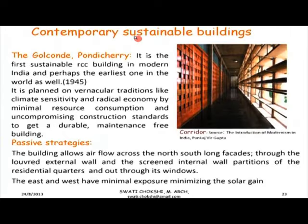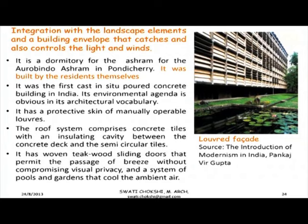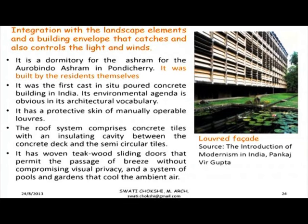Let us look at contemporary sustainable buildings. The first is the Gold Cone in Pondicherry — a dormitory for the Aurobindo Ashram built in 1945 by the residents themselves; Antonin Raymond was the architect. It is a landmark for its sustainable measures, passive strategies, and uncompromising workmanship. Built in exposed RCC — the first poured concrete building in India — it is largely intact today. It adopts passive strategies like orientation and cross ventilation to combat the hot humid coastal climate. It has an adjustable skin of asbestos cement louvers — no solid walls — and a double roof system with an insulating air cavity.